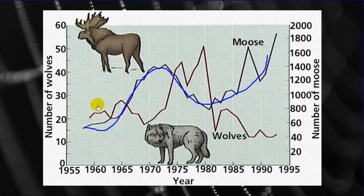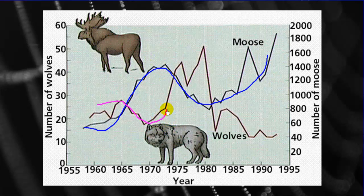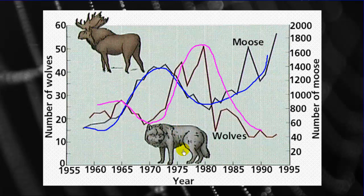At first the wolf population was at its peak, eating lots of moose to sustain itself. But as moose numbers decreased, the wolves couldn't sustain their population — not enough food to reproduce — so their numbers dipped. As wolves dipped, they ate fewer moose, allowing more moose to reproduce. As moose increased, there was plenty of food for wolves, and their population grew again. This cycle kept repeating, showing how predators affect prey populations and prey affect predator populations.